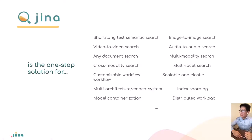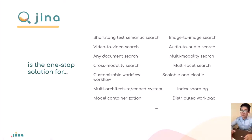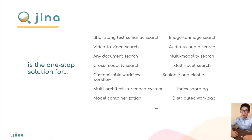Here is a list of what GINA can do: long text, short text, and semantic search; image-to-image, video-to-video, and audio-to-audio search; even any kind of document search. You can use it for multi-modality search, cross-modality search, and multi-facet search. It supports index sharding, replicas, elastic distributed workload, model containerization, and Docker. Many features are already implemented, and some will be released in the next few weeks.